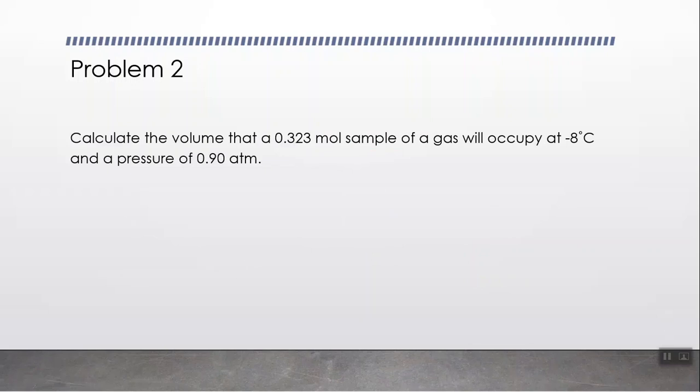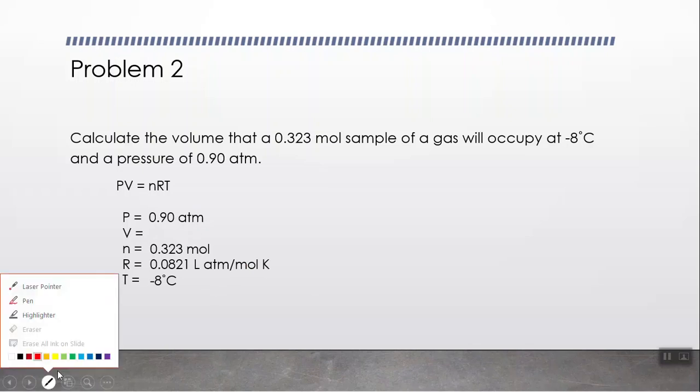Problem number two. Calculate the volume that a 0.323 mole sample of a gas will occupy at negative 8 degrees Celsius and a pressure of 0.90 atmospheres. Let's define our variables. We have moles, temperature, and pressure. Pressure is in atmospheres, so the R value is 0.0821 because these two units need to match up. That's the reason we use this value.